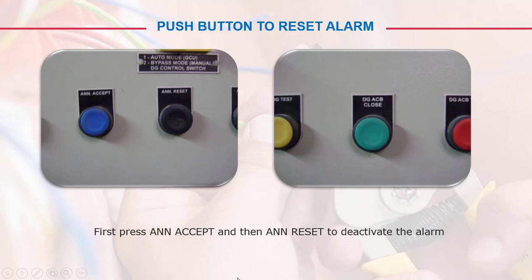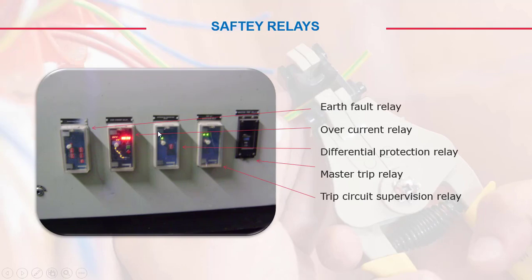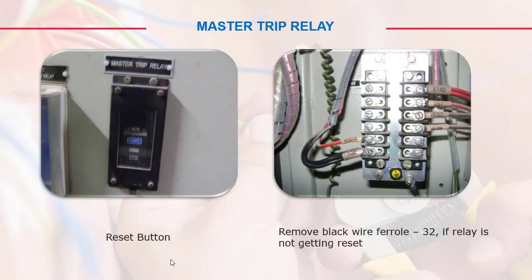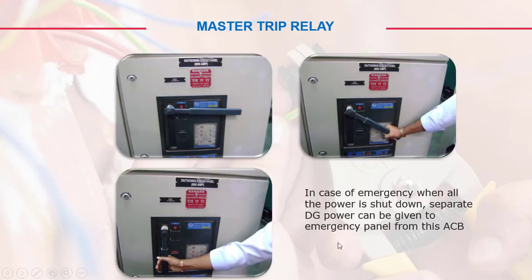To reset the alarm, press accept and then reset to deactivate it. The safety relays include earth fault relay, overcurrent relay, differential protection relay, trip circuit supervision relay, and master trip relay. If a relay is not getting reset, you need to check your control circuit and prepare accordingly. In case of emergency, when all power is shut down, separate DG power can be supplied to the emergency panel through the ACB.